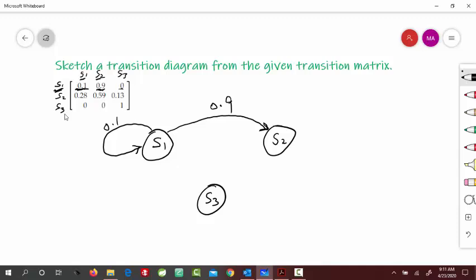Then S1 to S3 is 0, so there is no transition going from S1 to S3. You can either make an arrow and put 0 or don't make an arrow—both are okay.